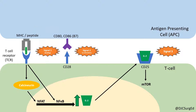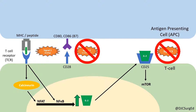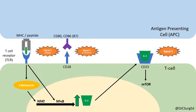Various pharmacotherapies have been developed to block signals 2 and 3 to inhibit clonal proliferation of T cells. Engagement of B7 molecules provides T cell activation signals if engaged to CD28, or inhibitory signals if ligating CTLA-4.